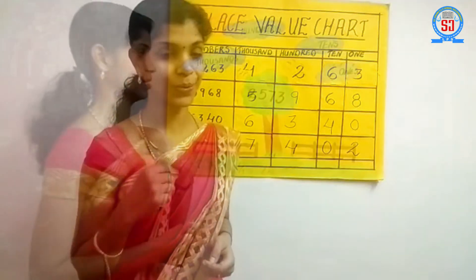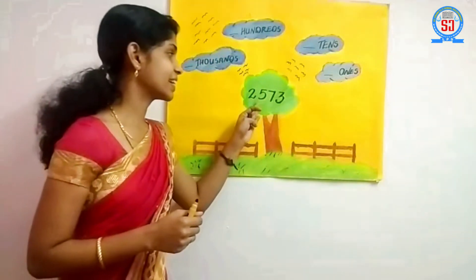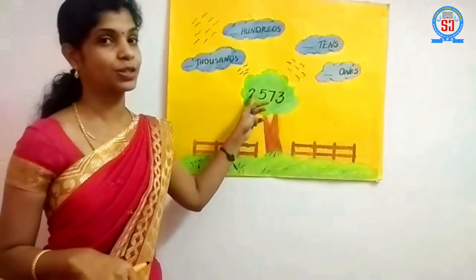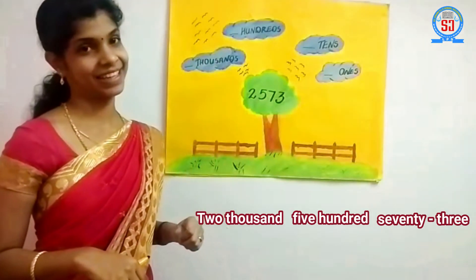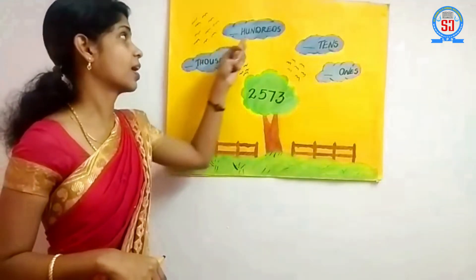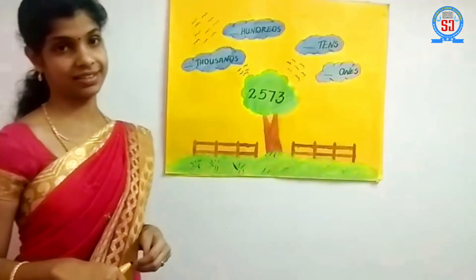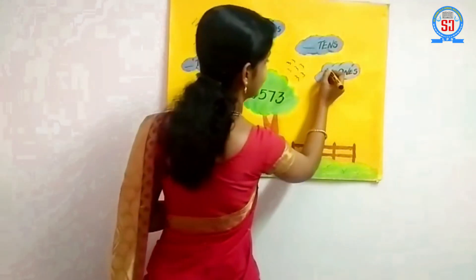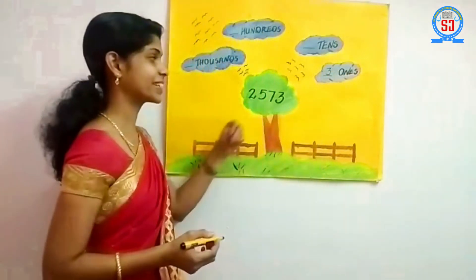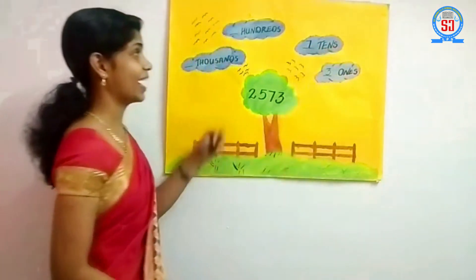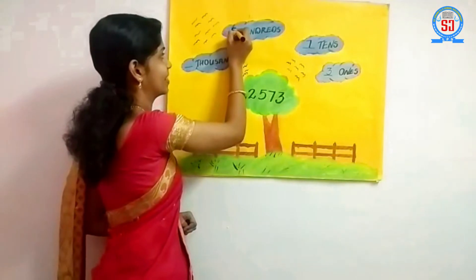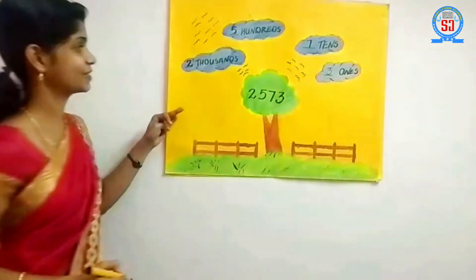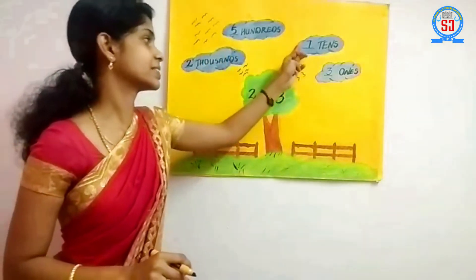Now I will give an activity. Here is a tree with some clouds. I have written one number — can you read it? You already know how to read: two thousand five hundred seventy-three. Now it is asked: how many thousands are there, how many hundreds, how many tens, how many ones? How many ones? Very good — three ones. How many tens? Very good — seven tens. How many hundreds? Very good — five hundreds. How many thousands? Two thousands. So we read: two thousand five hundred seventy-three.